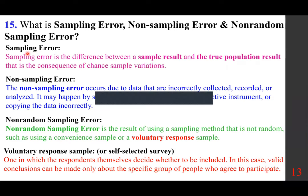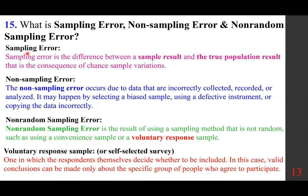Sampling error is expected — it occurs because of the difference in size between the sample and the population. Non-sampling error normally involves some sort of mistake. Non-random sampling sometimes happens when we don't have a choice, but random sampling is extremely important.